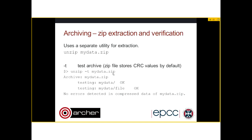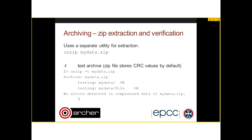For unzipping, unlike the others, zip uses a special unzip utility for extracting an archive. You can use it as-is without any additional flags for simple extraction. There is a -t flag for verifying and testing an existing archive — again, no copy of the data needed to compare against. You don't need to specify any particular formats on zip creation as zip files store CRC values by default. Here's an example of a zip file successfully passing verification: unzip -t skips the extraction and gives you a report saying your files are okay and no errors were detected.